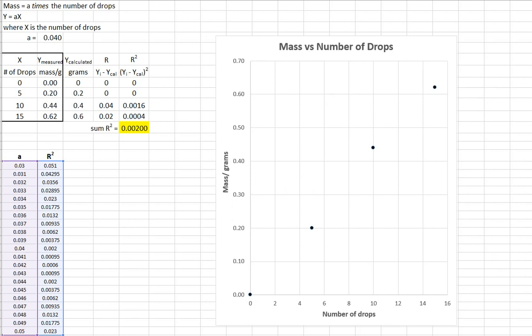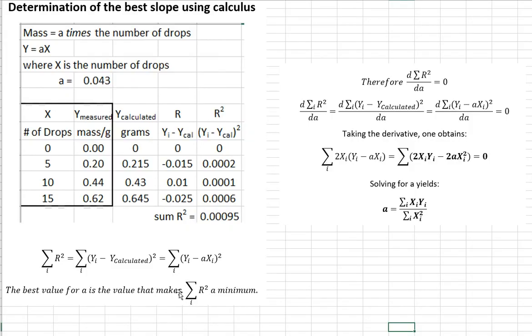But it's kind of cumbersome to do. Another thing you can do is use calculus. Let's talk about that. Determination of the best slope using calculus. This is called the least squares method.